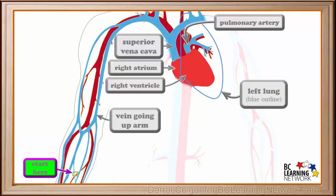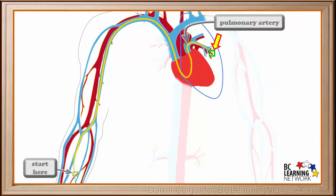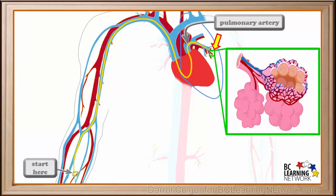Now we'll show the pathway bicarbonate ions and CO2 take as they travel from tissues toward the lungs. Just follow the yellow line. We see it goes up the vein in the arm, through the superior vena cava, and then into the right atrium, right ventricle, and out the pulmonary artery. These are tiny air sacs called alveoli. Bicarbonate and carbon dioxide in the blood move through the pulmonary artery into the capillaries of the alveoli.